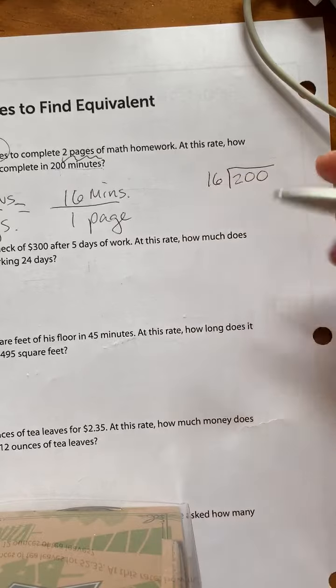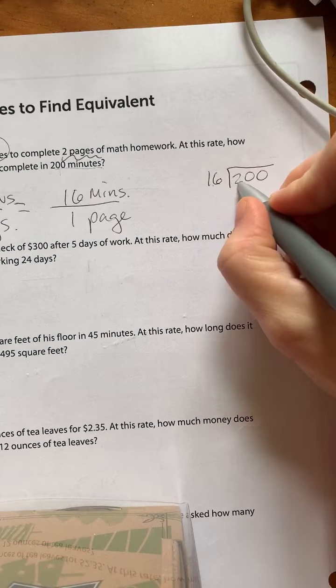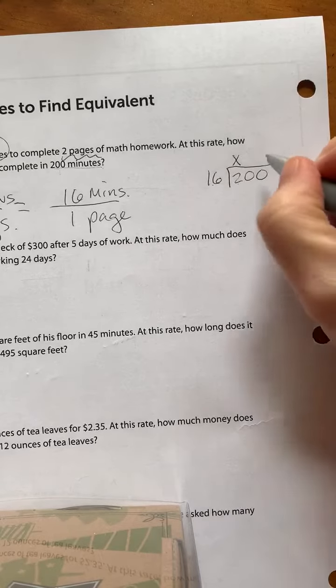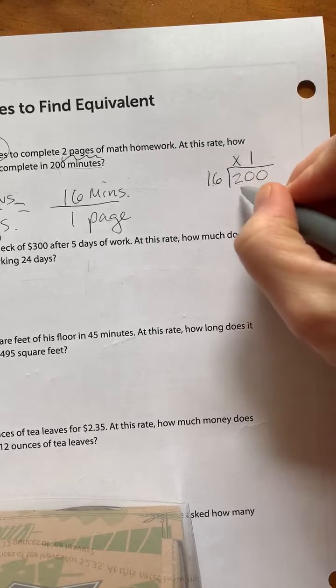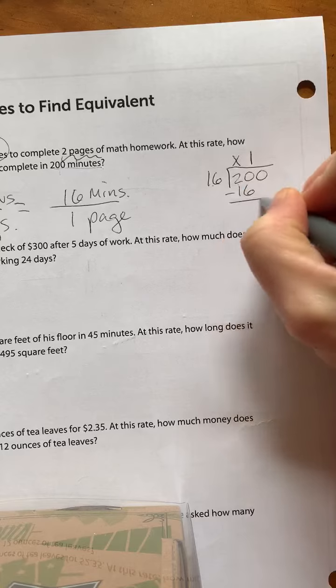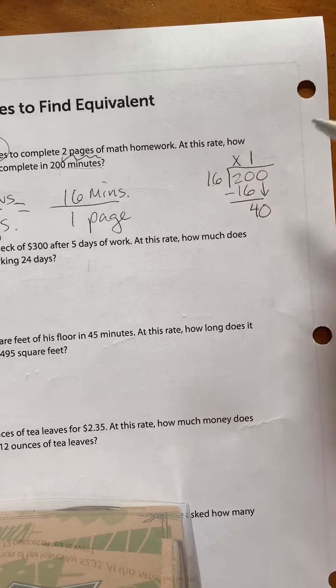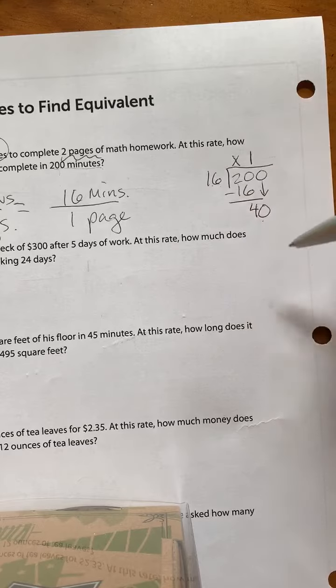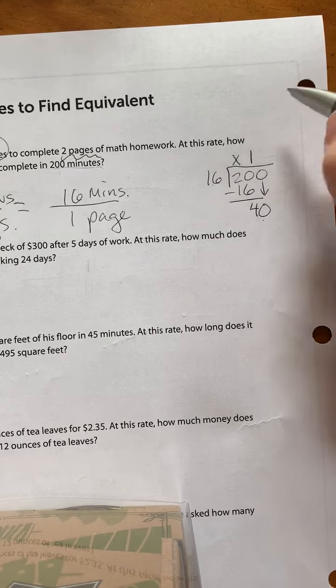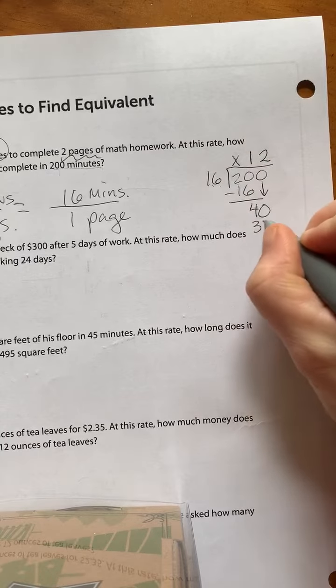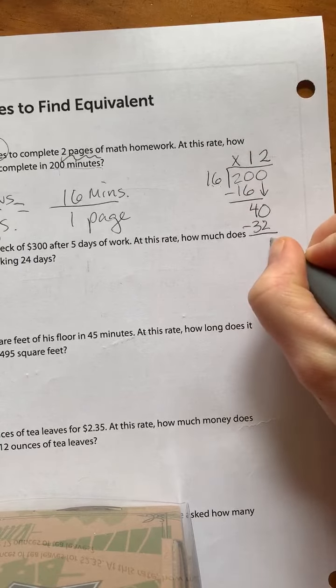How many multiples will this person be able to do? Can 16 fit into 2? No way. Can 16 fit into 20? Good, once. 1 times 16, subtract, and we're left with 4. Bring down the 0. How many times can 16 fit into 40? That's right, very good, twice. 2 times 16 is 32, subtract, I'm left with 8.